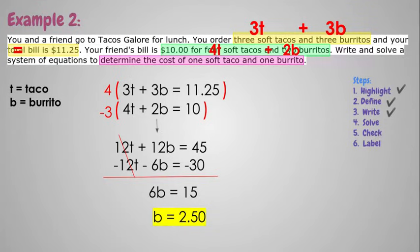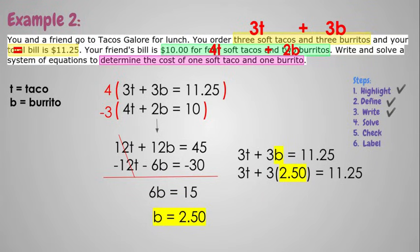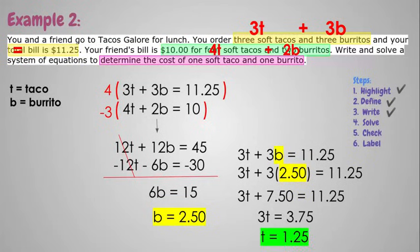Now I'm going to pick, it doesn't matter in this case, but I went with the top equation, and I replaced my b with 2.50, and then I solve this. So first I multiply, then I would subtract the 7.50 from both sides and divide by 3, which gives me t equals 1.25. So now we solved it.